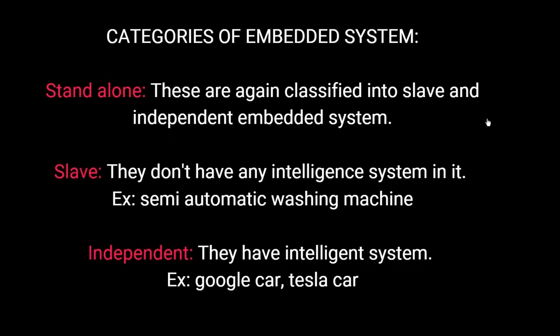The various categories of embedded systems include standalone systems, which are further classified into slave and independent. Slave systems have no intelligent system, for example a semi-automatic washing machine. Independent systems have intelligent systems, like the Tesla car or the Google car.